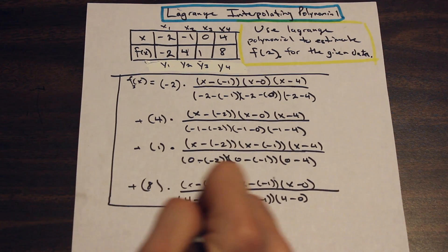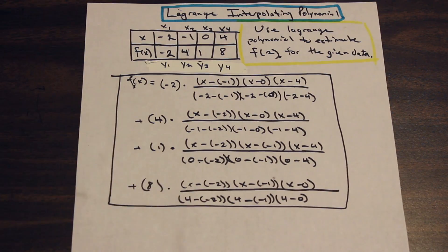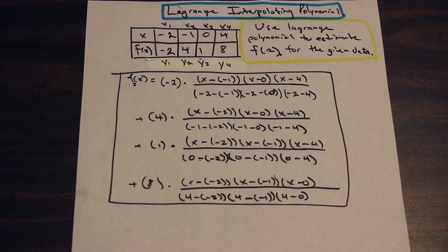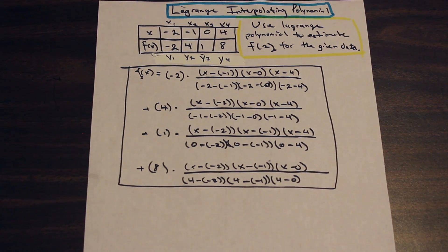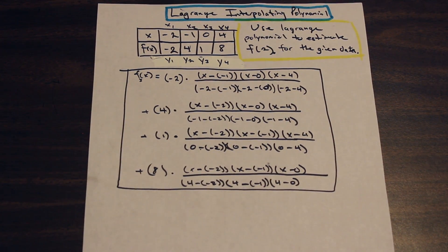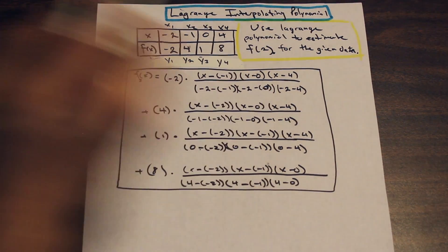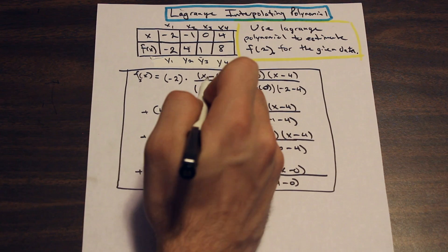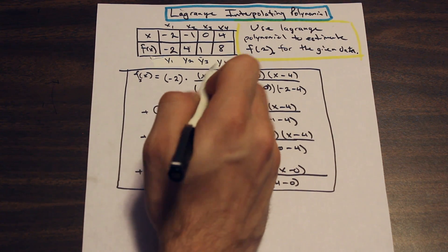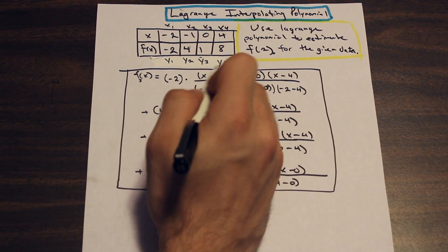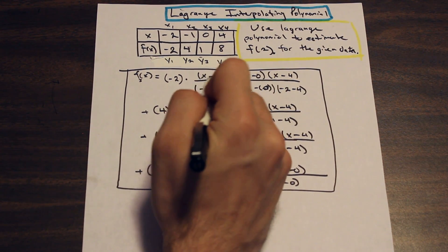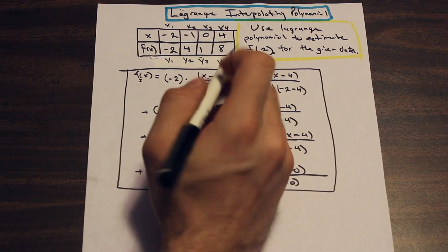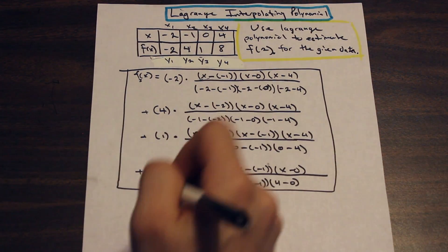This here is our complete Lagrange polynomial. The question asks us to estimate f(2), so we take our polynomial and plug in x = 2 everywhere that variable x appears.